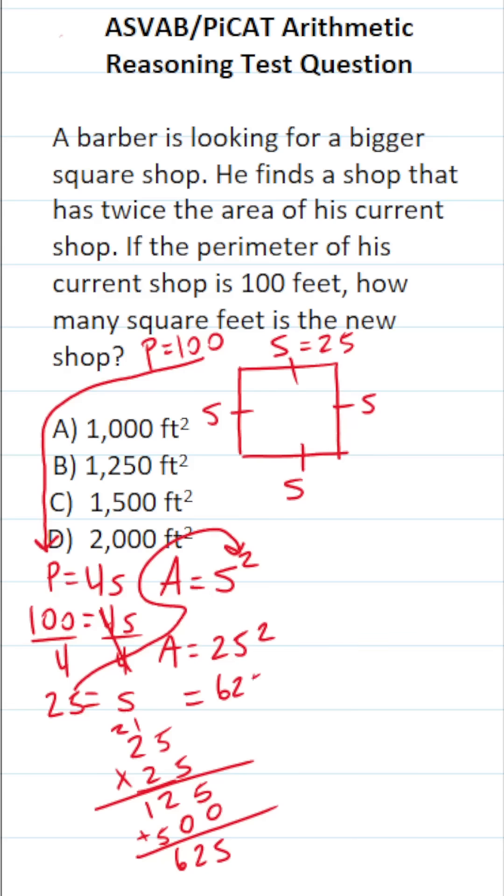In other words, the area of his current shop is 625 square feet. Now, according to the problem, the area of the new shop is going to be twice the area of his current shop. So the area of his new shop is going to be 2 times the area of his current shop, which is 625.